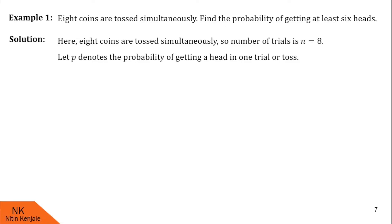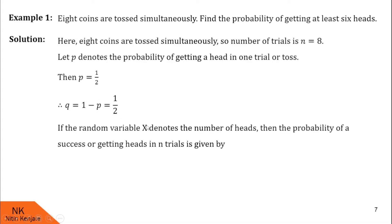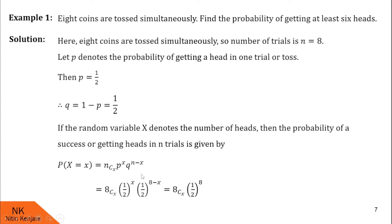Let p denote the probability of getting success — here, getting success means getting a head. We know that the probability of getting a head in one trial is 1/2, so p is 1/2. Therefore, the probability of failure q, which is 1 minus p, is also 1/2. If the random variable x denotes the number of heads, then the probability of x successes in n trials is given by P(X=x) = nCx * p^x * q^(n-x), because x follows binomial distribution. Here p is 1/2, q is 1/2, and n is 8. So P(X=x) becomes 8Cx * (1/2)^x * (1/2)^(8-x).